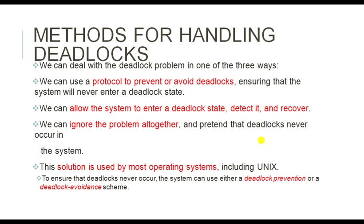Next, methods for handling deadlocks. There are certain methods: deadlock prevention, deadlock avoidance, and deadlock detection. First we discuss prevention. Deadlock prevention means through software you can implement certain protocols to prevent deadlock. If you have information regarding the processes, resources, requests, and demands, you can develop a resource allocation graph and identify whether a deadlock situation will occur or not.